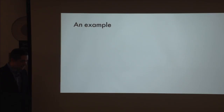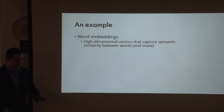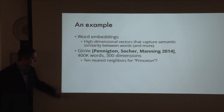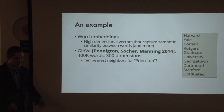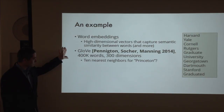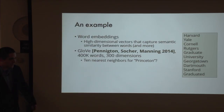Let me show some examples. Suppose we want to do nearest neighbor search on word embeddings. Word embeddings: you take a corpus of English text and then learn high-dimensional vectors for every English word. What you want from these embeddings is that the distance between vectors corresponds to semantic similarity between words. Suppose we take some pre-trained vectors and compute ten nearest neighbors for Princeton. Just purely solving the nearest neighbor problem on this set of vectors gives you semantically meaningful results.